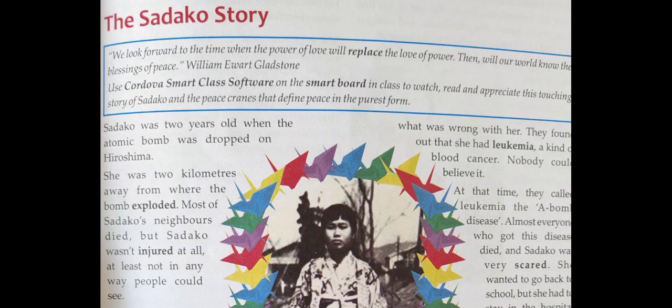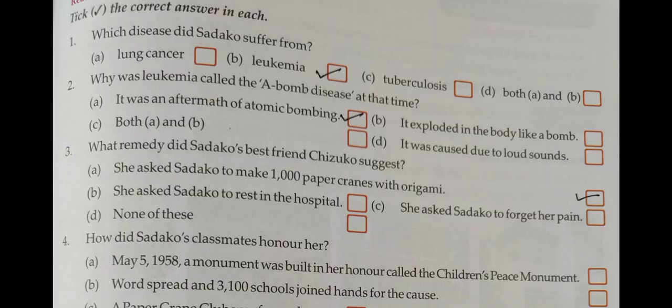Come to the MCQ first. The first MCQ: which disease did Sadako suffer from? Leukemia is the correct answer. Second: why was leukemia called the 'A-bomb disease'? At that time, it was an aftermath of the atomic bomb, so option A will be the correct answer here.